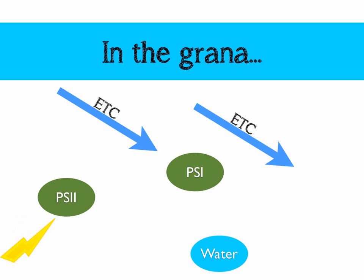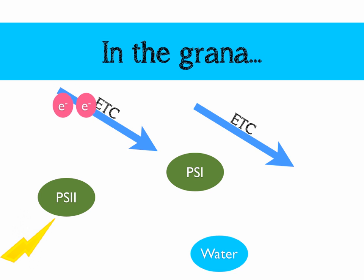We're going to imagine that a photon of light has just struck photosystem 2, which causes it to become excited. And when excitation occurs, two high-energy electrons are released, and they move to an electron transport chain. They're passed down from carrier to carrier, which releases a small amount of energy that the electron transport chain can use to produce ATP.